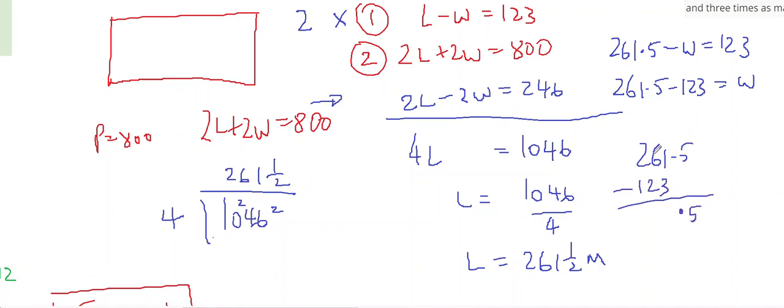261.5 minus 123. 0.5. Borrow from the 5. That gives 1. 11 minus 8. 5 is, 5 minus 2 is 3. 138 and a half. So the width equals 138 and a half meters, and the length is 261 and a half meters.